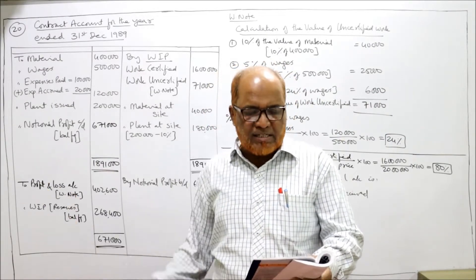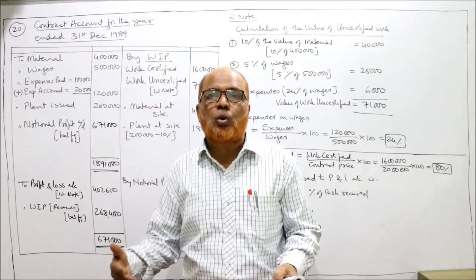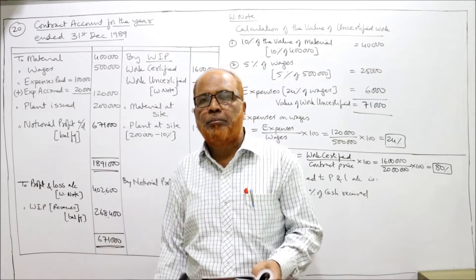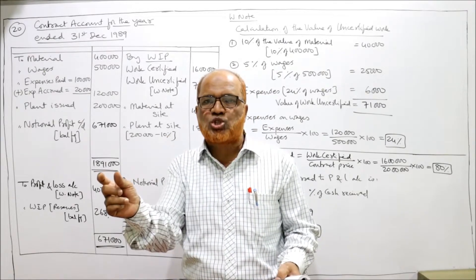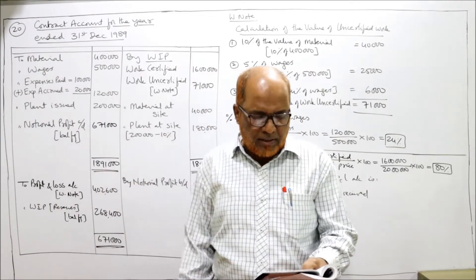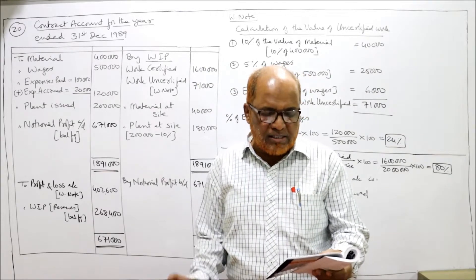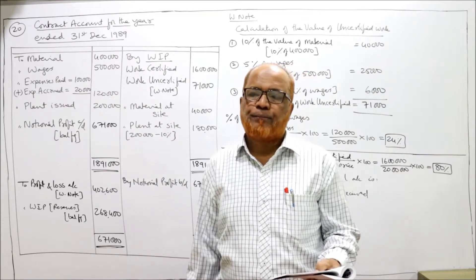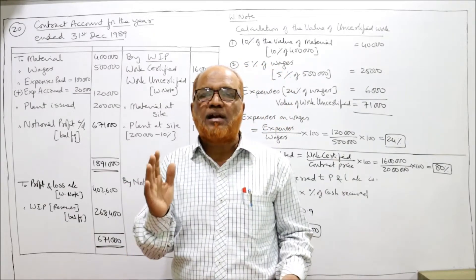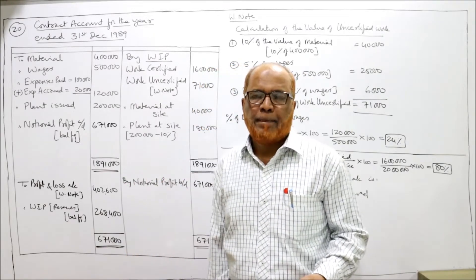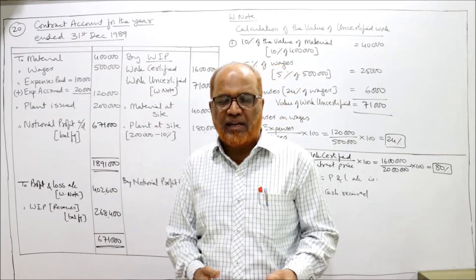Material — debit side. Wages — debit side. Expenses — debit side. Expenses accrued, meaning outstanding. So expenses paid and expenses outstanding are added together. Plant: 2 lakh rupees of plant was issued. Work certified is given in the problem as 16 lakh, and 90% of 16 lakh was received in cash.